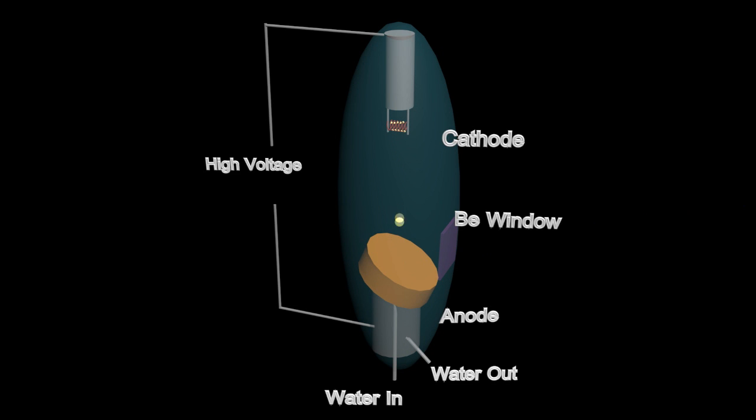The generated x-rays leave the tube through a beryllium window. This material is used because it has a low atomic number and therefore it doesn't absorb much of the x-rays.